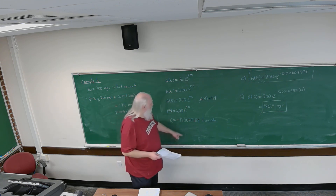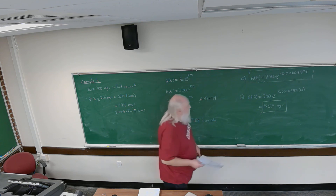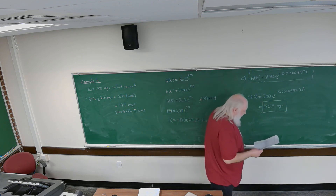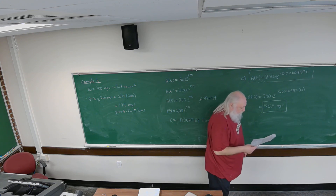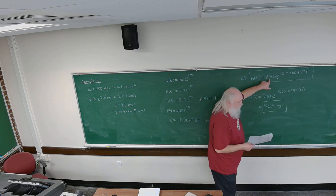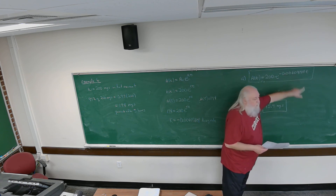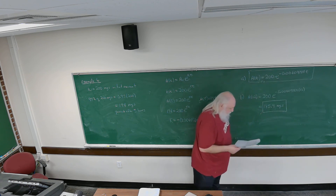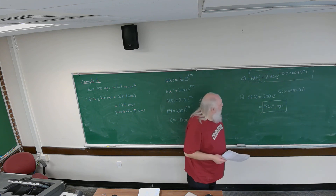Now I substitute this value of k into our model. The answer to part a — the exponential decay model for the amount remaining of the decaying substance after t hours — is a(t) equals 200 times e raised to minus 0.00609184 times t.